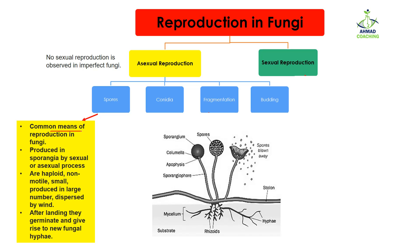First of all, spores — spores are the most common means of reproduction in fungi, meaning that mostly fungi reproduce asexually by the help of spores. The spores are produced in sporangia. Sporangia is a kind of box-like structure in which spores are present internally. Spores can be produced by sexual or asexual processes — mitosis or meiosis can take place. The spores are haploid, meaning they have the n number, or half number, of chromosomes.